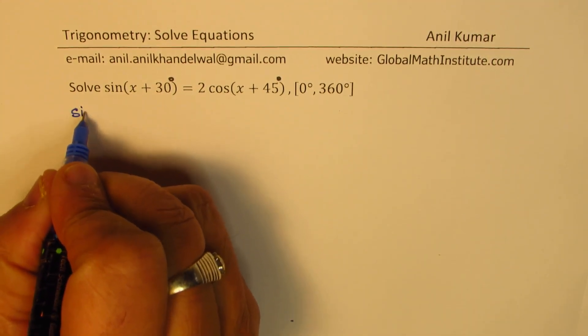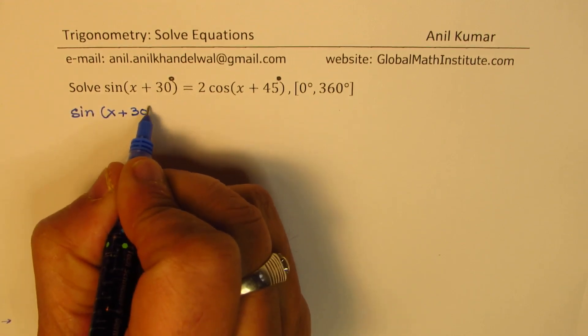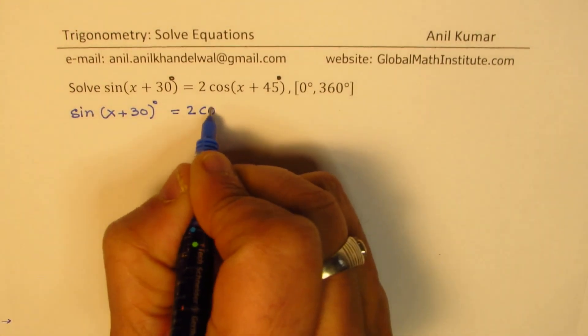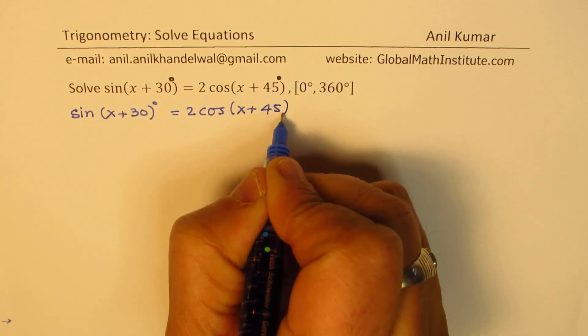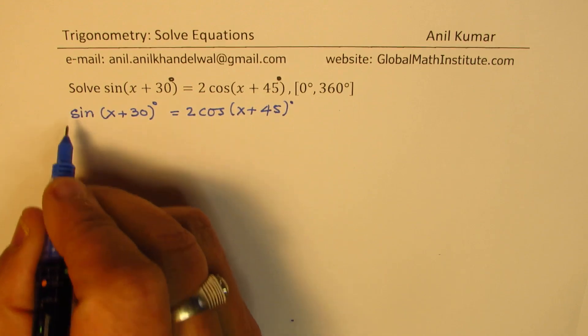So we have sin(x + 30°), all this is in degrees, equals to 2cos(x + 45°). So if you expand this using compound angle formula...